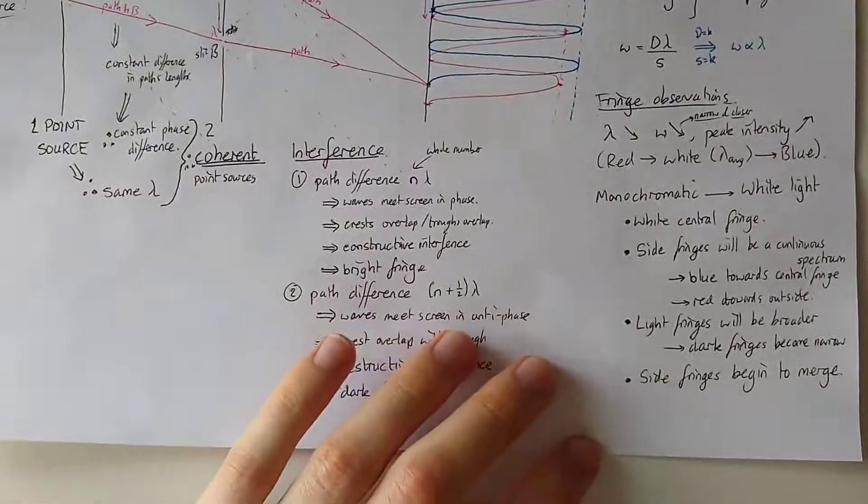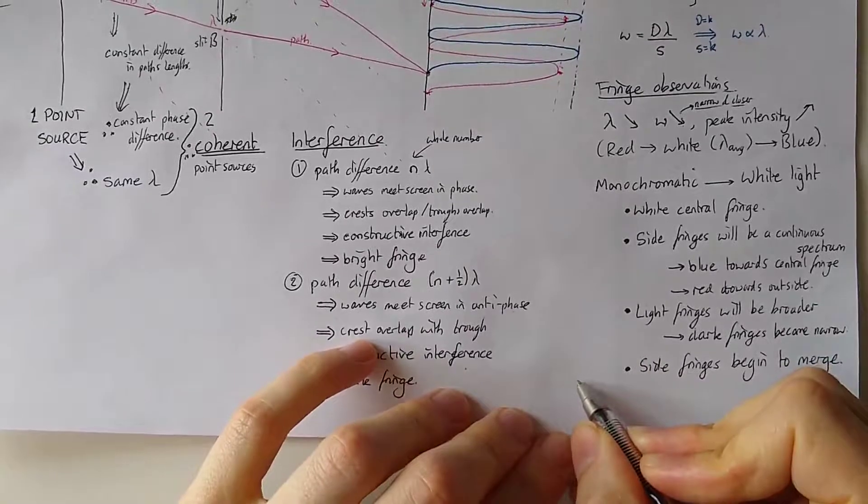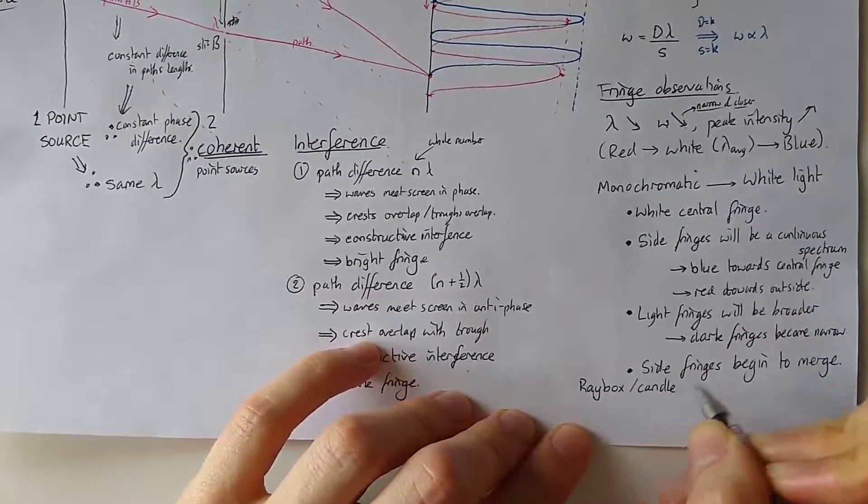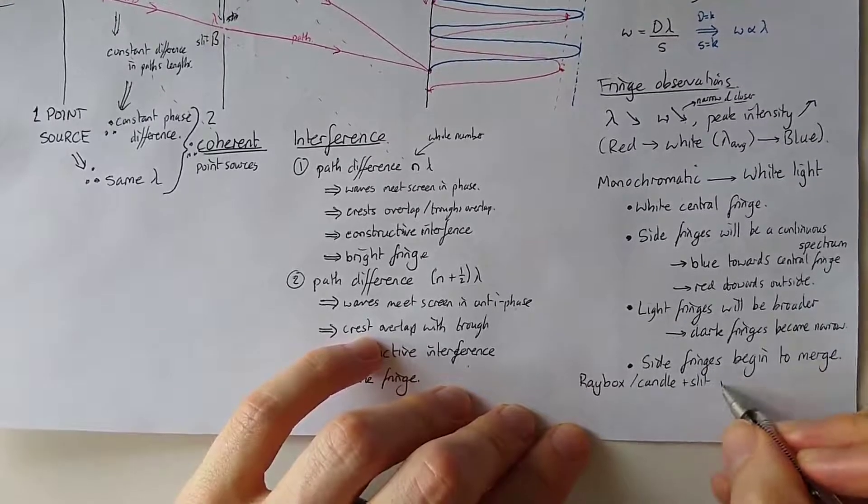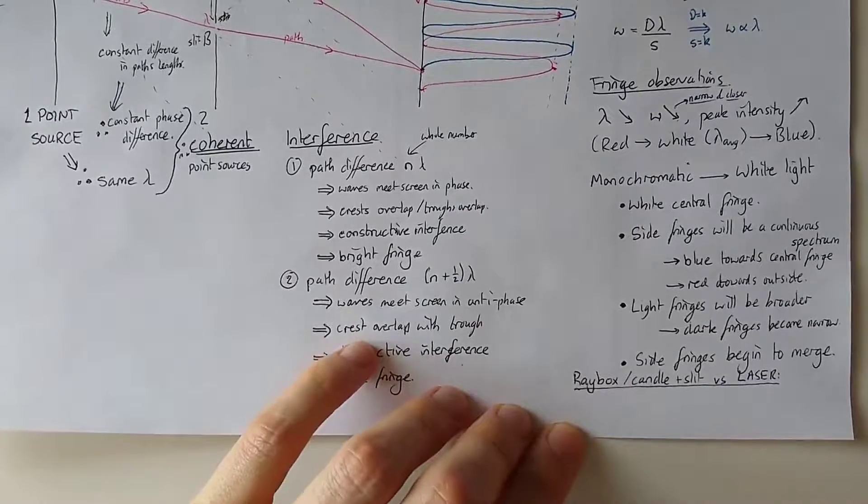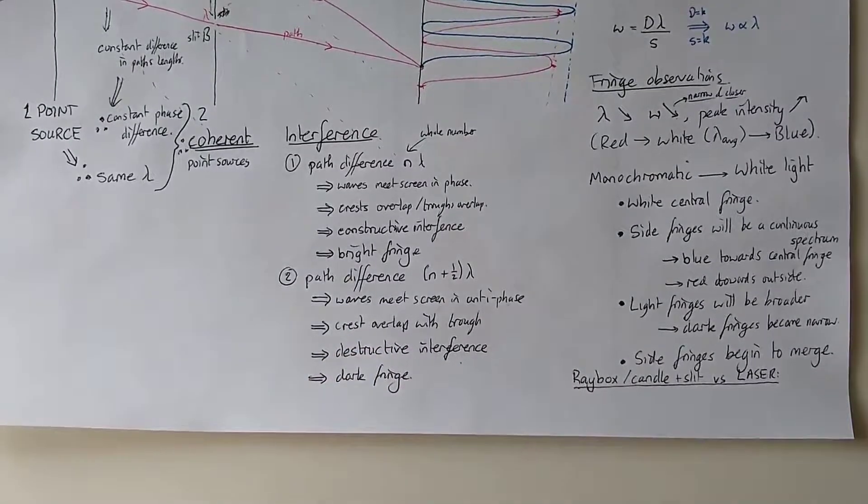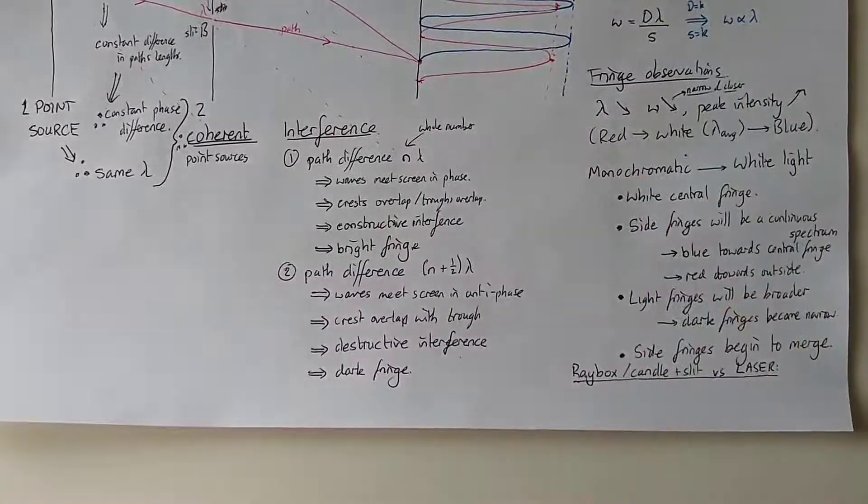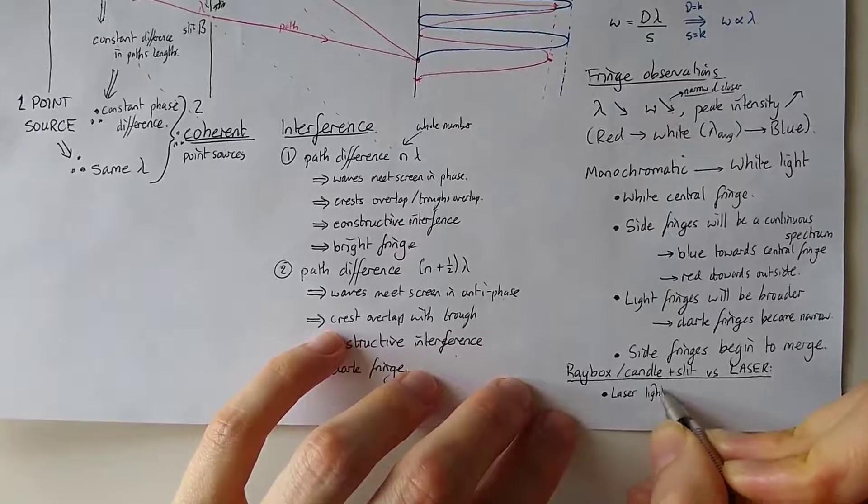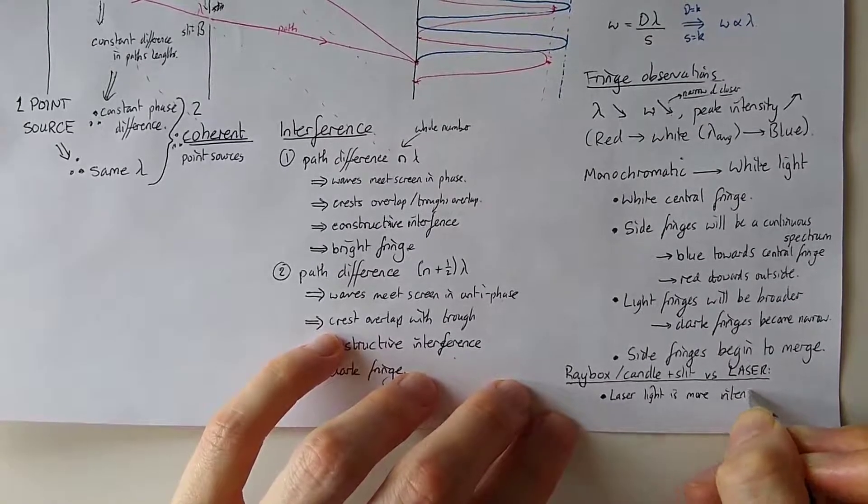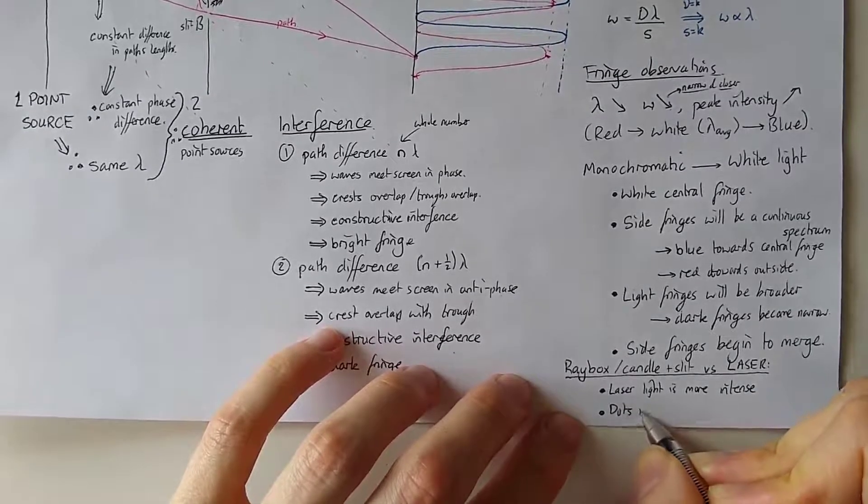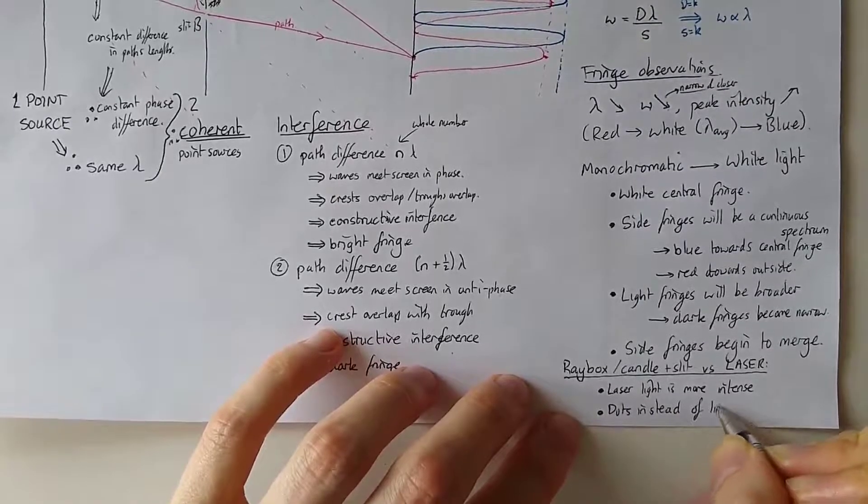Now, there's one more comparison that you may want to consider. And that's the difference between using a ray box, or candle plus slit, versus a laser. Well, your lasers are normally going to produce a dot. Obviously you can get ray box like lasers that produce a kind of slit. But in general you might expect to have a couple of differences. One is that the laser light would be more intense. That's why you have to wear the goggles, the laser goggles. You can't just wear normal lab goggles, that's not going to do anything.